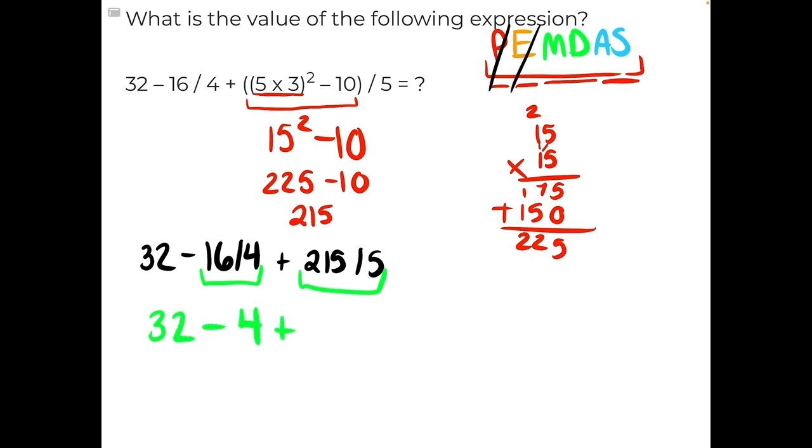And then 215 divided by 5. Let's do long division to figure that out. 5 cannot go into 2, but 5 can go into 21 four times. 5 times 4 is 20. We subtract, we're left with 1, and we bring down the next digit. 5 can go into 15 three times evenly with no remainder. Meaning that our answer here is 43.